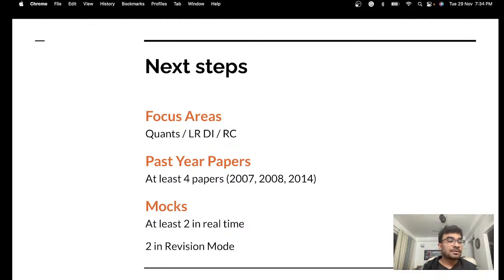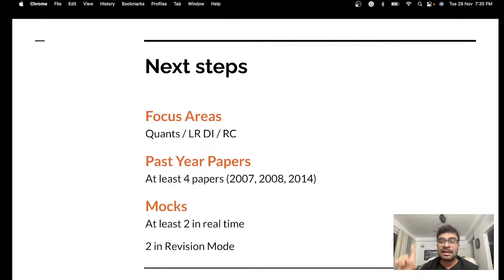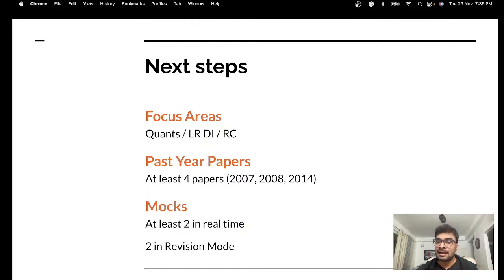Ginny is right — in revision mode, spend the full 2 hours on the mock, then analyze every question in detail, taking 4 hours to solve and understand each one. In revision mode it doesn't have to go question 1, question 2, question 3 in order — you review all of them deeply. On exam day, replicate the exact strategy you used in your mocks. However well you execute your strategy in the next three weeks of mocks, that is what will show up in the actual exam. Your input now is your output then.